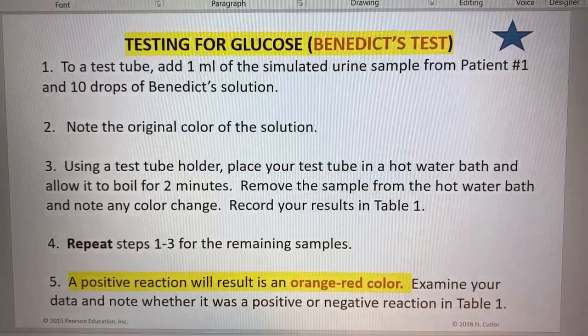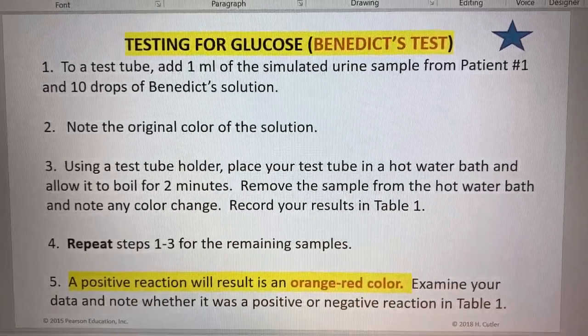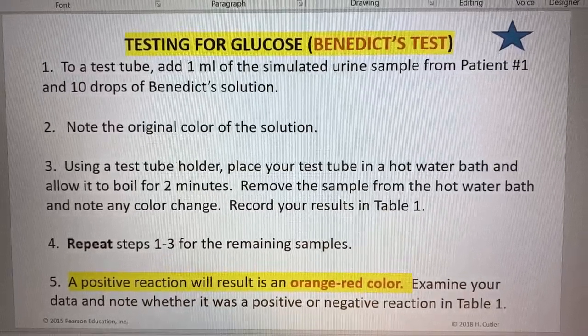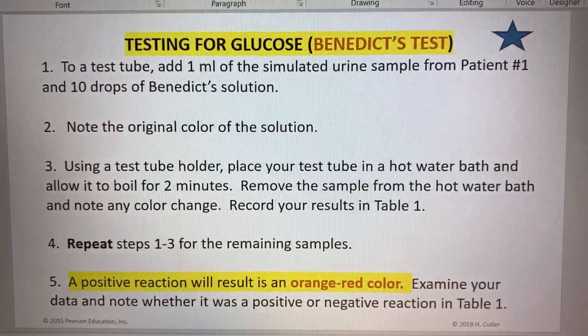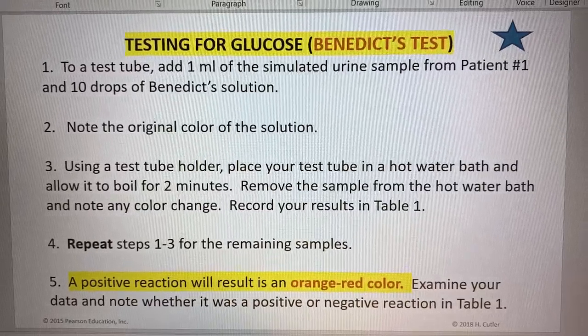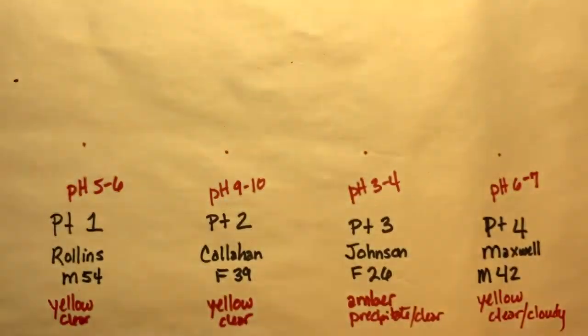We need to see what the color is to begin with when we first add the Benedict's and urine. Then we need to boil it for two to three minutes, which is what you have to do with Benedict's solution, and then we'll see what the color is at that point.